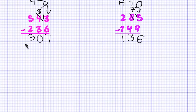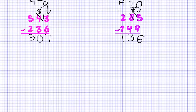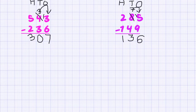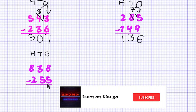As you notice in both of these sums, we borrowed from the tens friend and changed our ones calculation. Now let's move a little further. Our third calculation has 838 minus 255.